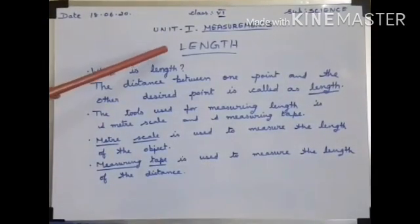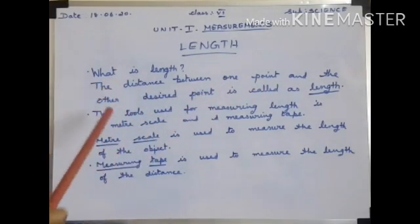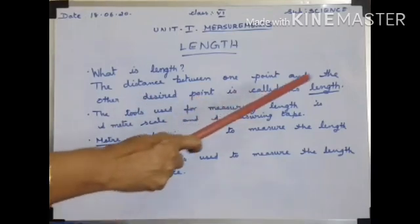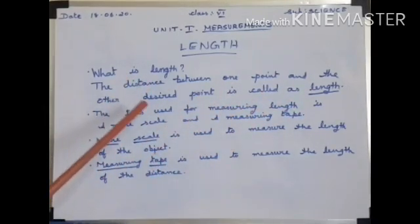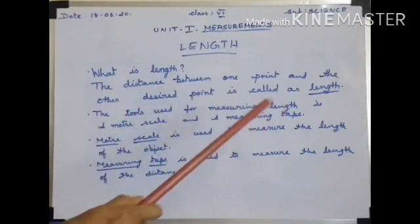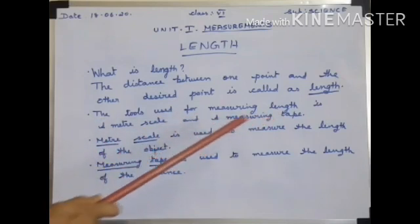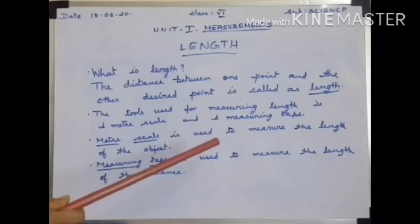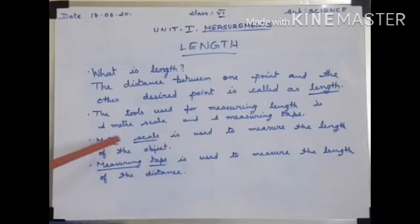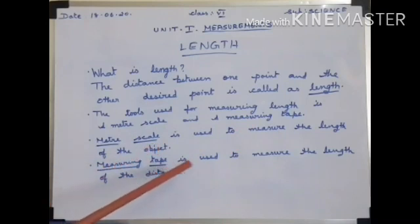Next, we are going to learn about length. What is called length? The distance between one point and the other desired point is called length. The tools used for measuring length are a meter scale and a measuring tape. A meter scale is used to measure the length of an object. A measuring tape is used to measure the length of a distance.